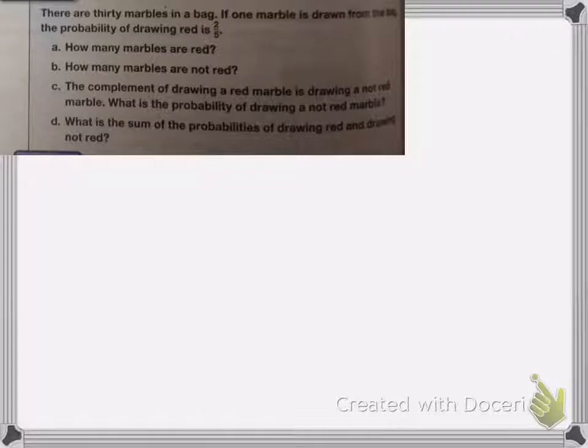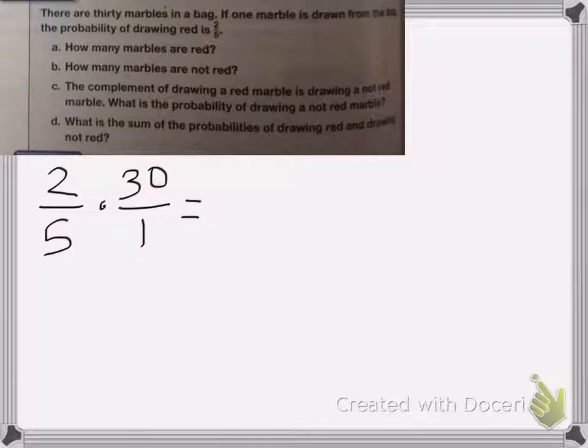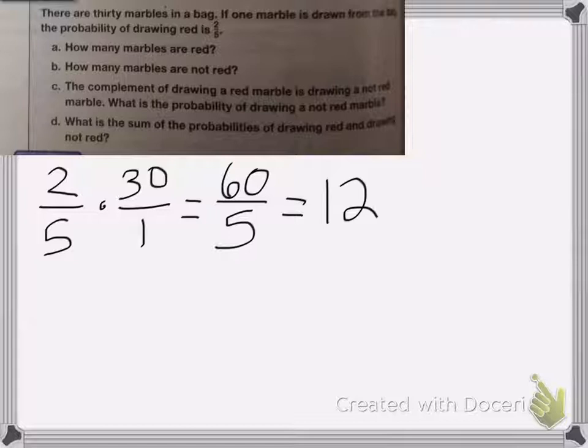So A, how many marbles are red? So I know that two-fifths of my marbles are red, and there are 30 marbles, two-fifths of the 30 marbles. So I'm going to multiply those together. So 2 times 30 is 60, and 5 times 1 is 5, so 60 divided by 5 is equal to 12. So I know that 12 of the marbles are red, okay?